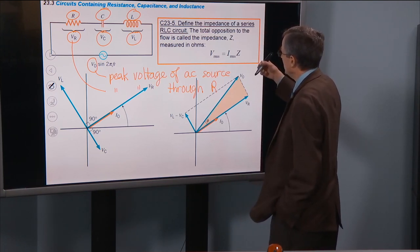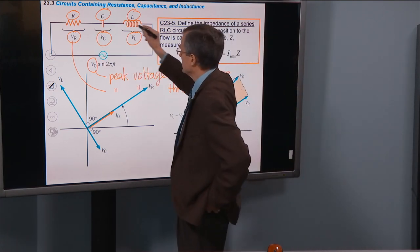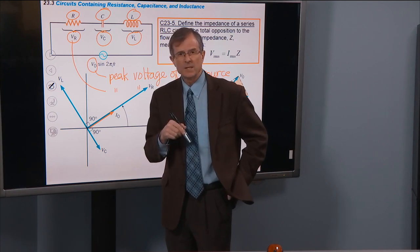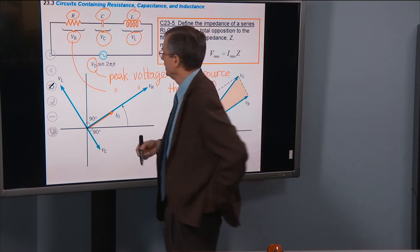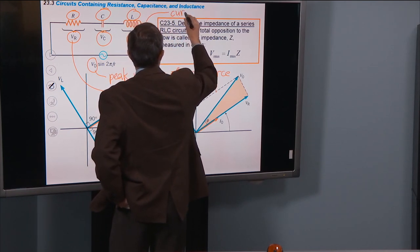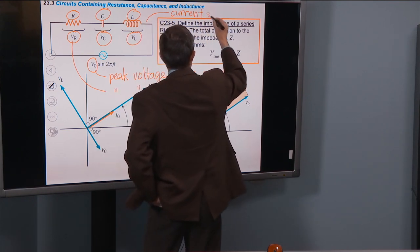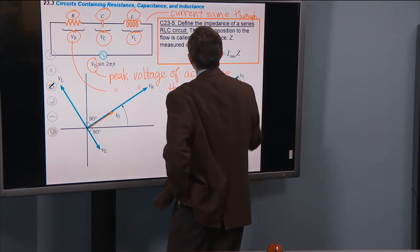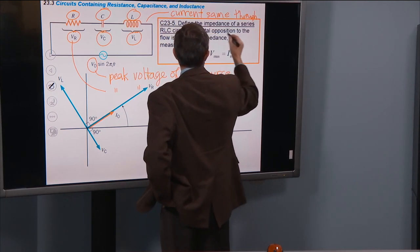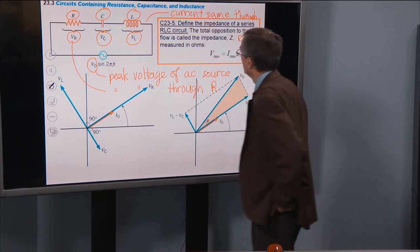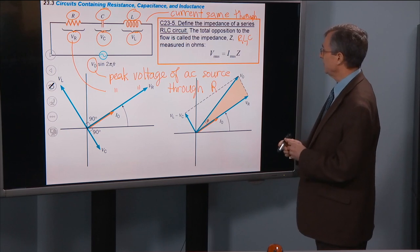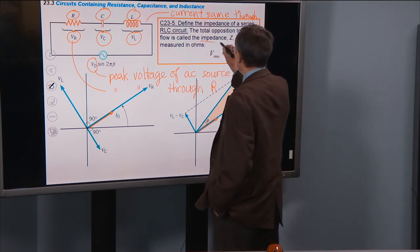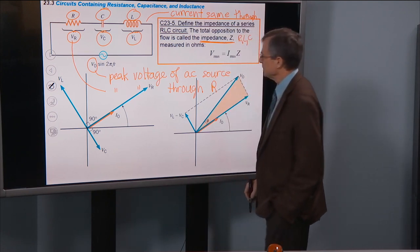Let's define the impedance of a series RLC circuit. All three elements are in series. What does it mean to be in series? It means the current through each one is the same. The total opposition to flow is called the impedance, denoted by the letter Z, and it's measured in ohms.